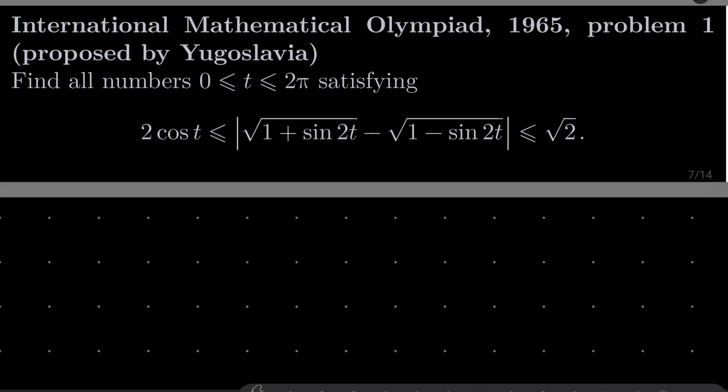Hello friends. In this video I'd like to solve the following problem from the International Mathematical Olympiad 1965, problem number 1, proposed by Yugoslavia. We wish to find all numbers t between 0 and 2π satisfying this inequality: 2cos(t) ≤ |√(1 + sin(2t)) − √(1 − sin(2t))| ≤ √2.